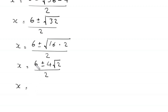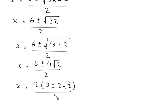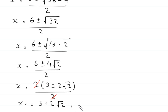Factoring 2 from the numerator: x equals 2 times (3 plus or minus 2 root 2) over 2. Cancelling the 2, we get two values: x₁ equals 3 plus 2 root 2, and x₂ equals 3 minus 2 root 2.